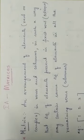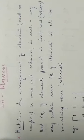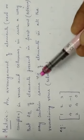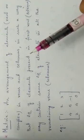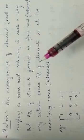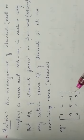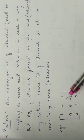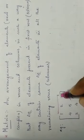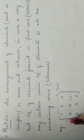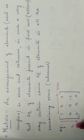Let us try to elaborate the definition. Arrangement — suppose there are any number of elements. I am taking 9 elements; you can take 4 elements or 3 elements. Arranging them in rows and columns. See here — this is a row, and this is a column.